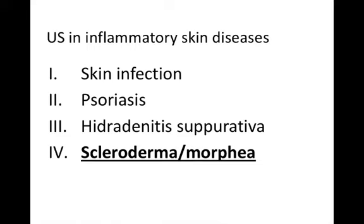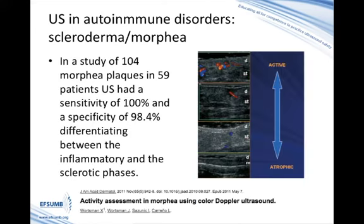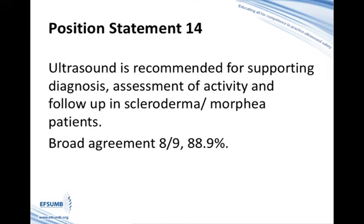The last disorder is scleroderma and morphea. Scleroderma is the condition most widely studied by ultrasound, as treatment varies according to the stage of disease — inflammatory in early stages or sclerotic in late stages. We usually find thickening of the dermis, absence of adnexal structures, and decreased blood flow. In a study of more than 100 morphea plaques in 59 patients, ultrasound had a sensitivity of 100% and a specificity of 98% differentiating between the inflammatory and sclerotic phases. We conclude that ultrasound is recommended for supporting diagnosis, assessment of activity, and follow-up in scleroderma and morphea patients. We reached broad agreement.